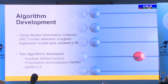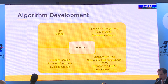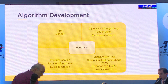Algorithm development used a logistic regression model creating two models: HOPE and HOPE CT. Factors included age, gender, foreign body involvement, day of the week, mechanism of injury, fracture location and type, laceration, visual acuity, eye exam findings, motility findings, and RAPD findings.